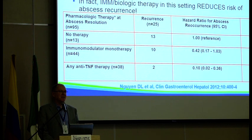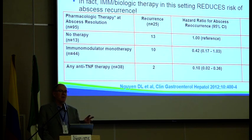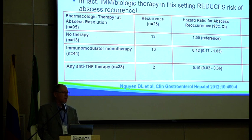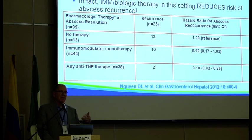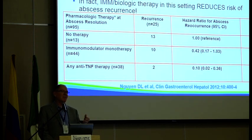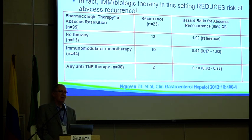A special situation is the Crohn's patient with an intra-abdominal abscess who has had the abscess drained — when can you start anti-TNF therapy? The answer is: as soon as you have control of the abscess, you can go ahead and start. Studies including one we did at Mayo showed that starting an anti-TNF actually reduces the risk of a recurrent abscess, because you're starting to heal the diseased bowel and the fistula. In selected patients who are adequately drained and don't have a tight stricture, you could consider treating with medical therapy.